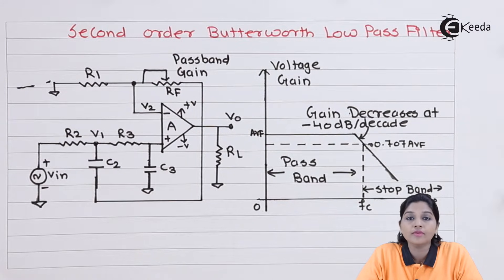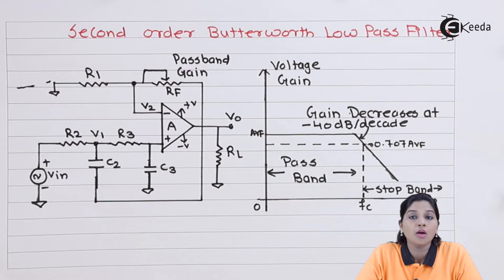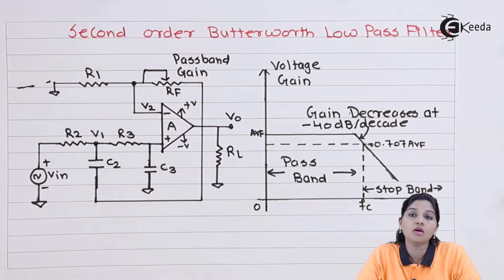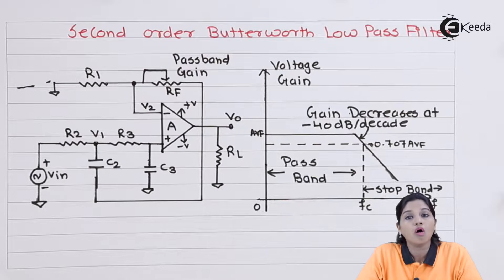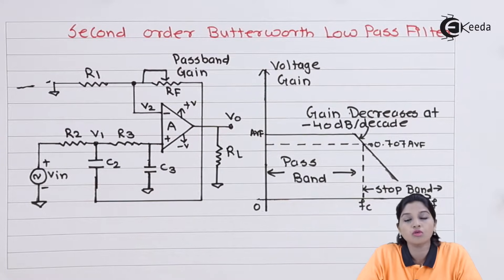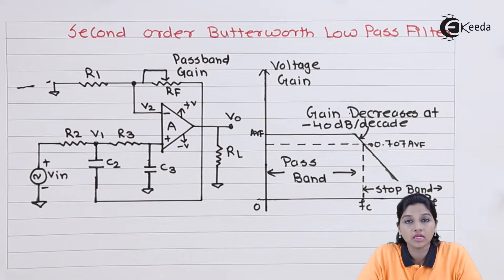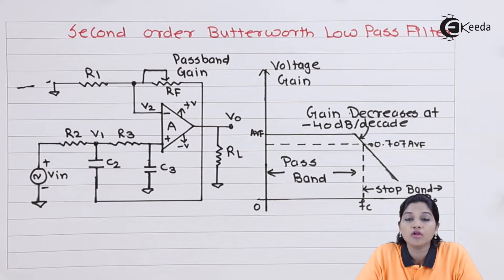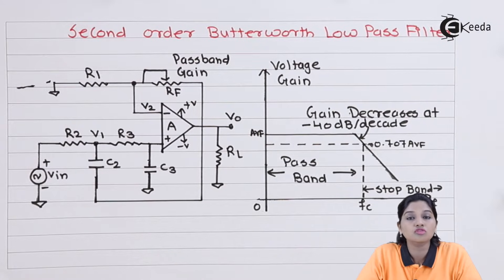In the stop band, frequencies are blocked or attenuated by the filter, and the gain decrements depending upon the order of the filter. The order of the filter defines the roll-off rate, which is the rate at which gain decrements in the stop band.